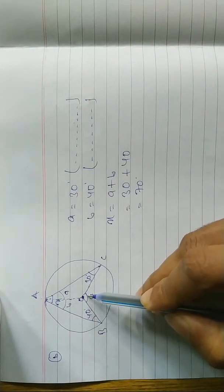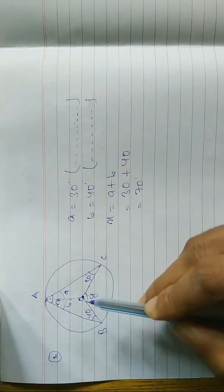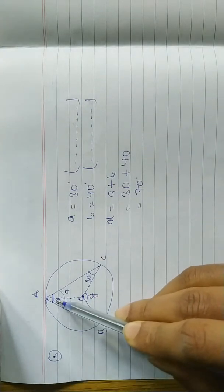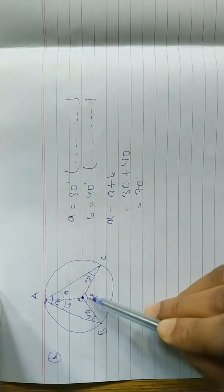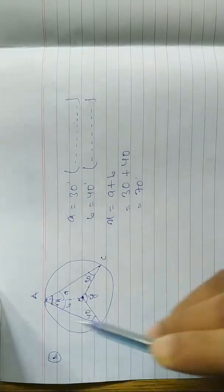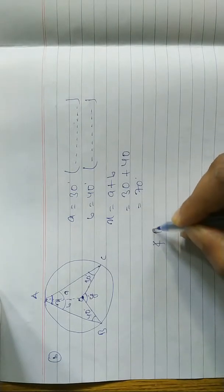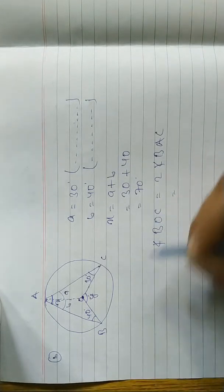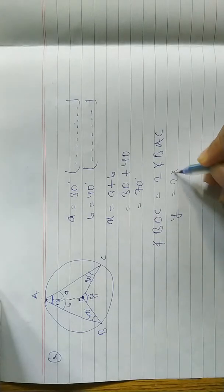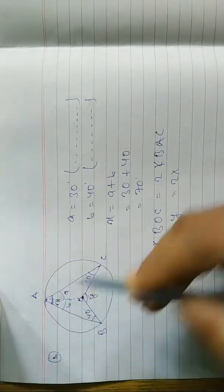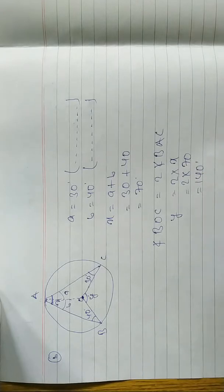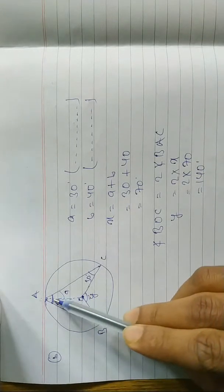To find y: y is the central angle and x is the inscribed angle. The central angle is double the inscribed angle, so angle BOC equals 2 times angle BAC. Therefore y equals 2 times 70 equals 140 degrees. The central angle is always double the inscribed angle.